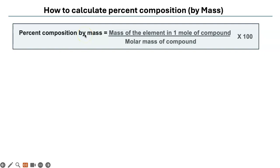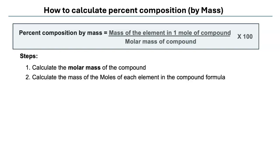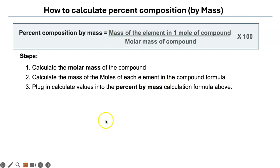The percent composition of an element by mass in a compound's chemical formula is equal to the mass of the element in one mole of the compound divided by the molar mass of the compound times 100. I will explain it to you in a problem. First step, you calculate the molar mass of the compound. Then you calculate the mass of the moles of each element in the compound's formula. Then you plug in the values to this equation, multiply it by 100, and calculate. That's it.